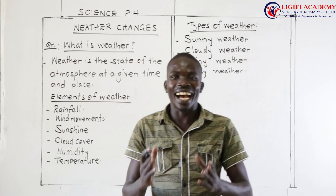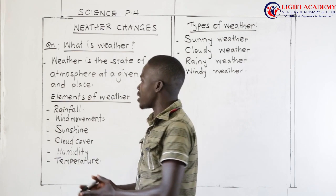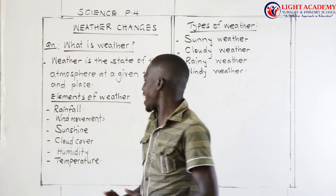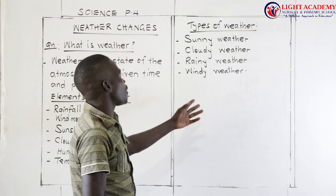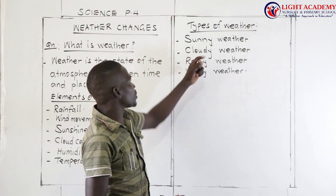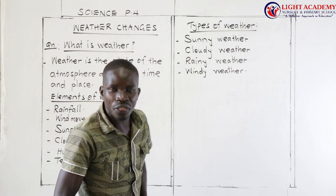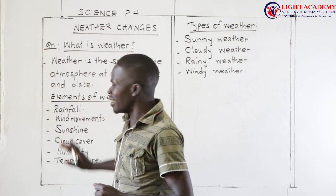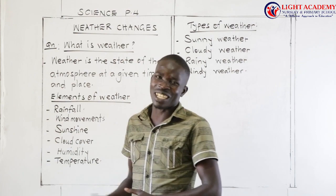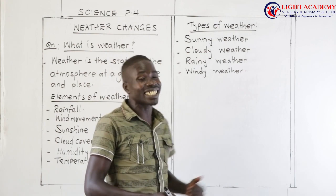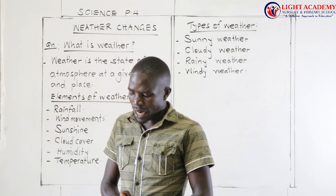Don't forget: weather is the state of the atmosphere at a given time and place. When asked about elements of weather, mention rainfall, wind movements, sunshine, cloud cover, humidity, and temperature. The types of weather are sunny, cloudy, rainy, and windy. These are types, and the others are elements — sometimes we confuse the elements with the types of weather.